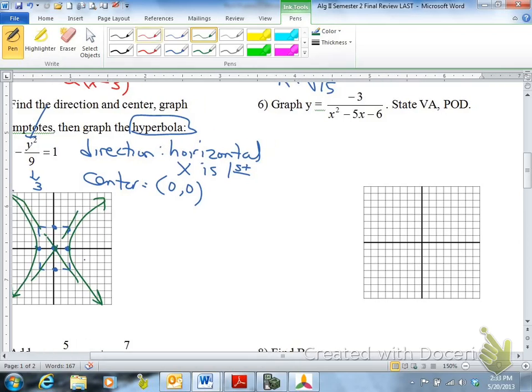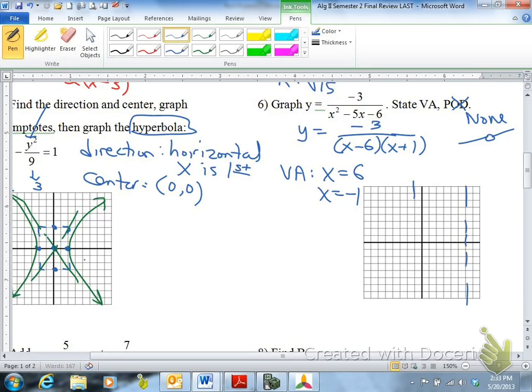The next one's graphing. So first, you should factor. You have negative 3, x minus 6, x plus 1. Since no factors divide out, we have no points of discontinuity. The point of discontinuity looks like that, but there's none of those. We have two vertical asymptotes. Make sure you include the x equals, x equals 6, x equals negative 1 for the asymptotes. So that means we have dashed line right here, dashed line right there. Those are asymptotes.